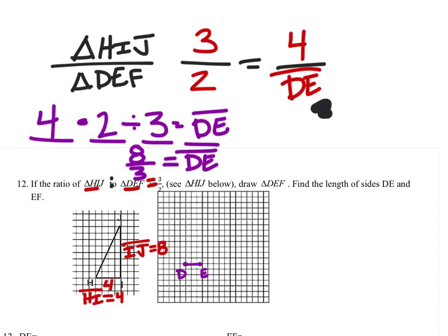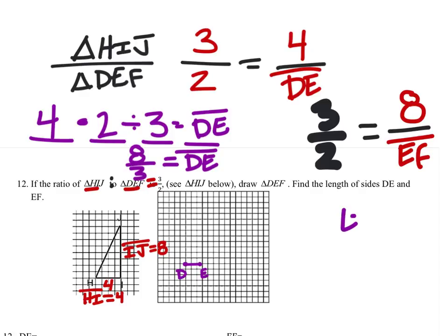Next I'll take those same ratios. I've got 3 halves, and this should be equal now to a separate, different ratio, because I'm now looking for side EF, which is part of triangle DEF, so it's in the denominator. And its corresponding side on triangle HIJ is 8. If I use the same method to solve, I have 8 times 2 divided by 3, which means that EF has a length of 16 thirds, or about 5 and a third.